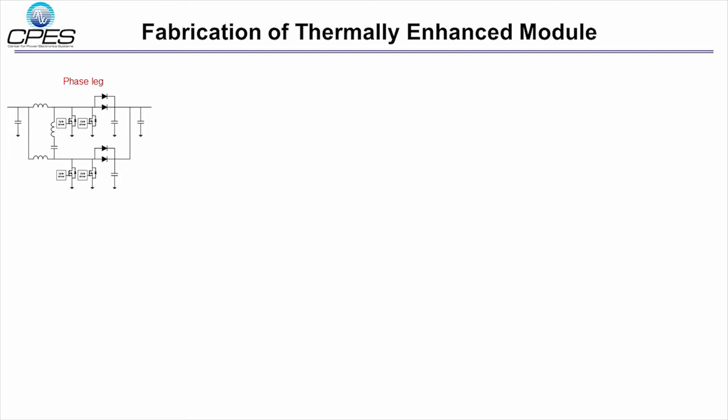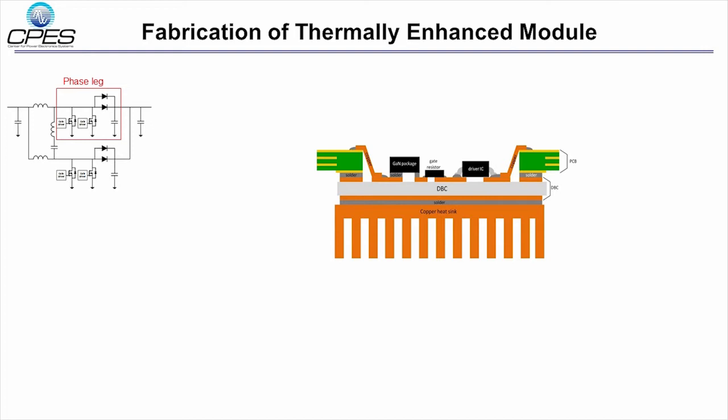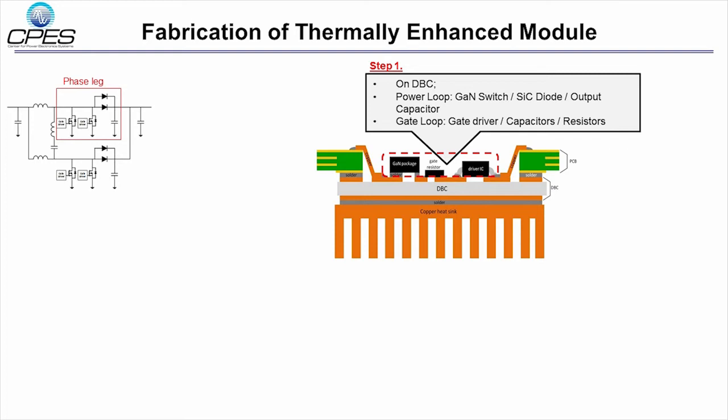Now let's look at the detailed fabrication process. Each DBC module was designed for one phase leg and this layout illustrates the packaging process. Firstly, on DBC, the power loop and gate loop were integrated so that the loop size could be minimized. Then the top side of DBC was connected to the bottom side of PCB to have stable mechanical connections.